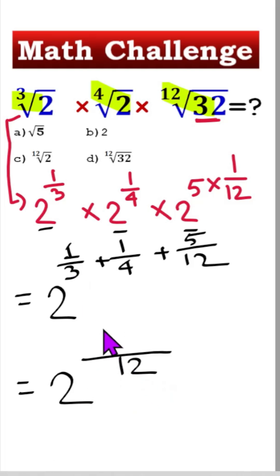So 12 divided by 3, here is 4. 12 divided by 4, it will be 3. 12 divided by 12 is 1. So 1 times 5 is 5, right.